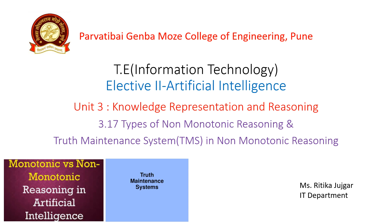So in the reasoning under uncertainty, there is one part that is non-monotonic reasoning. In the previous video, we already discussed about the monotonic reasoning and the non-monotonic reasoning. The monotonic reasoning means we cannot change or vary some statements or sentences. But in non-monotonic reasoning, some knowledge or facts will vary or change according to the statements. So this non-monotonic reasoning is a part of uncertainty.